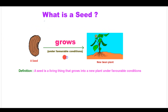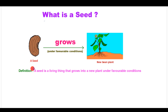This picture helps you to remember the definition very easily. Here is the definition. A seed is a living thing that grows into a new plant under favorable conditions. This is a seed — it is a bean seed. The seed is a living thing that grows into a new bean plant under favorable conditions.